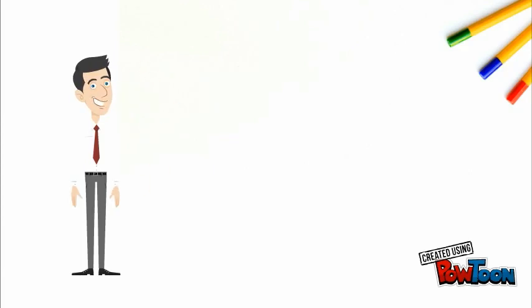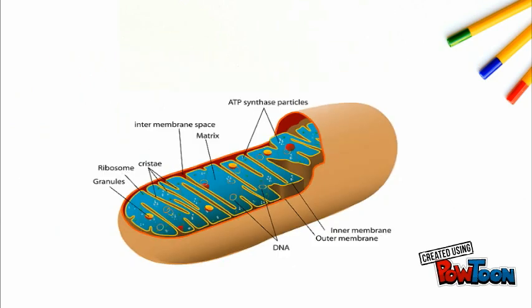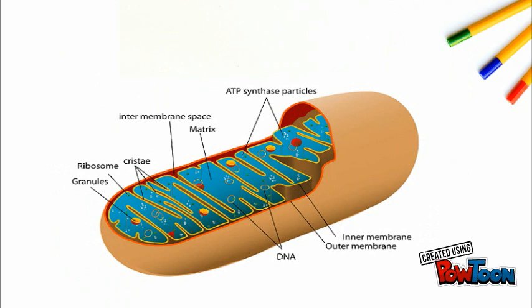Hello, I'm Justin, and I'm going to be speaking about pyruvate oxidation. The part of the cell in which pyruvate oxidation occurs is in the mitochondrial matrix.